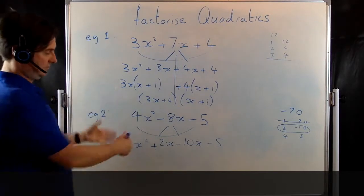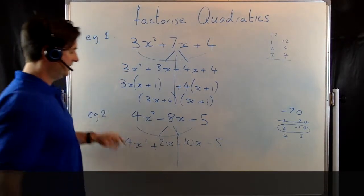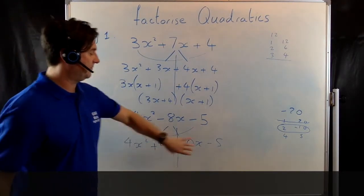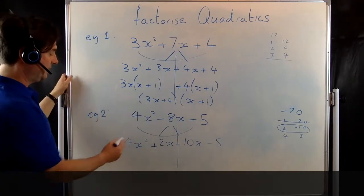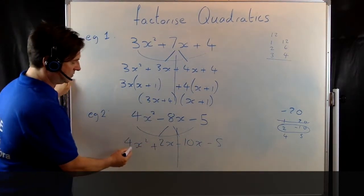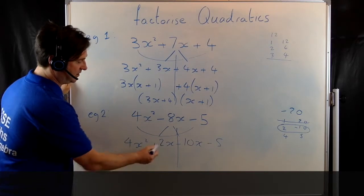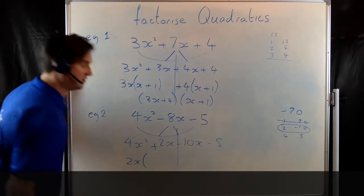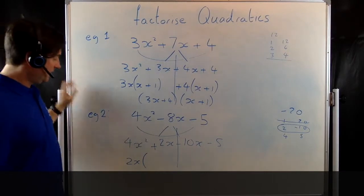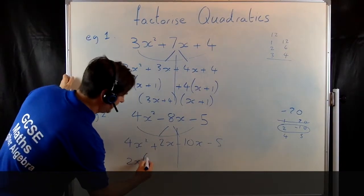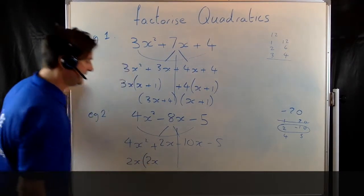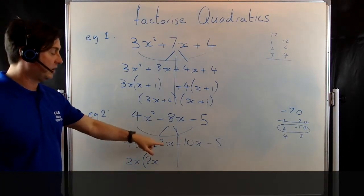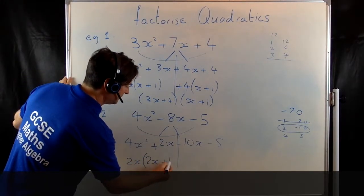I've now got 2 pairs. I factorise each pair individually. So let's have a look at the first one. What is a factor of both 4x squared and 2x? It's 2x. Put the 2x outside the brackets. 2x times 2x gives me 4x squared. And 2x times 1 gives me 2x.